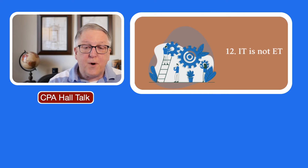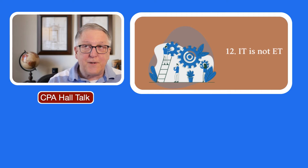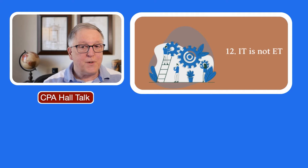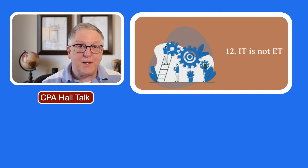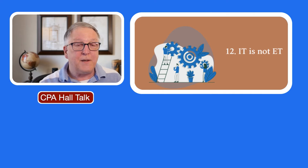Here we are in Chapter 12. You may wonder why I titled this chapter 'IT is not ET.' You'll recall the movie ET — we have this extraterrestrial that comes down to Earth and becomes friends with a young boy. The interaction between ET and the young boy is amusing and very interesting, and the interaction that auditors have with IT can also be interesting and amusing.